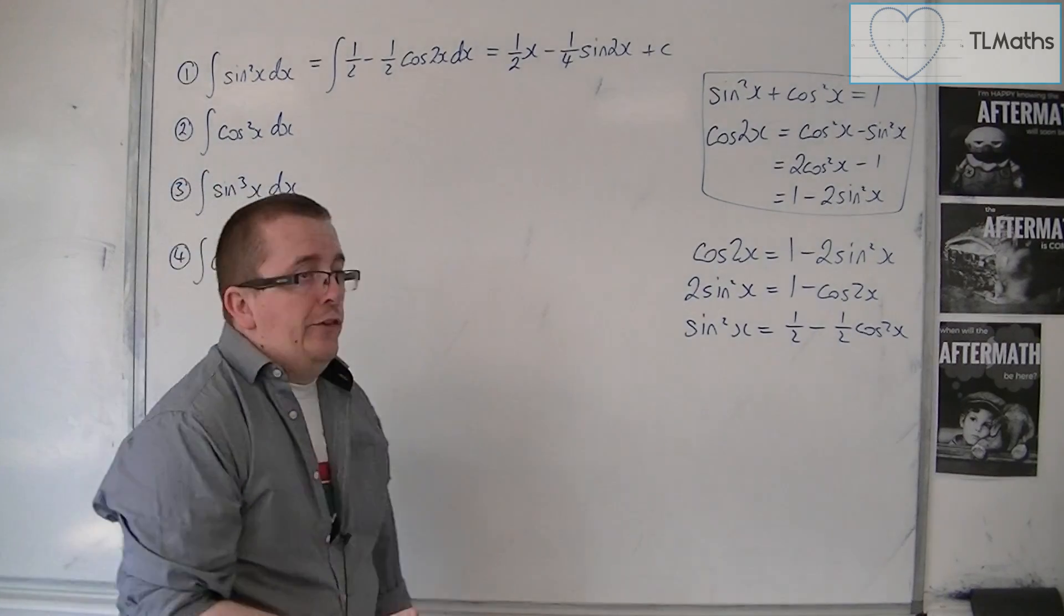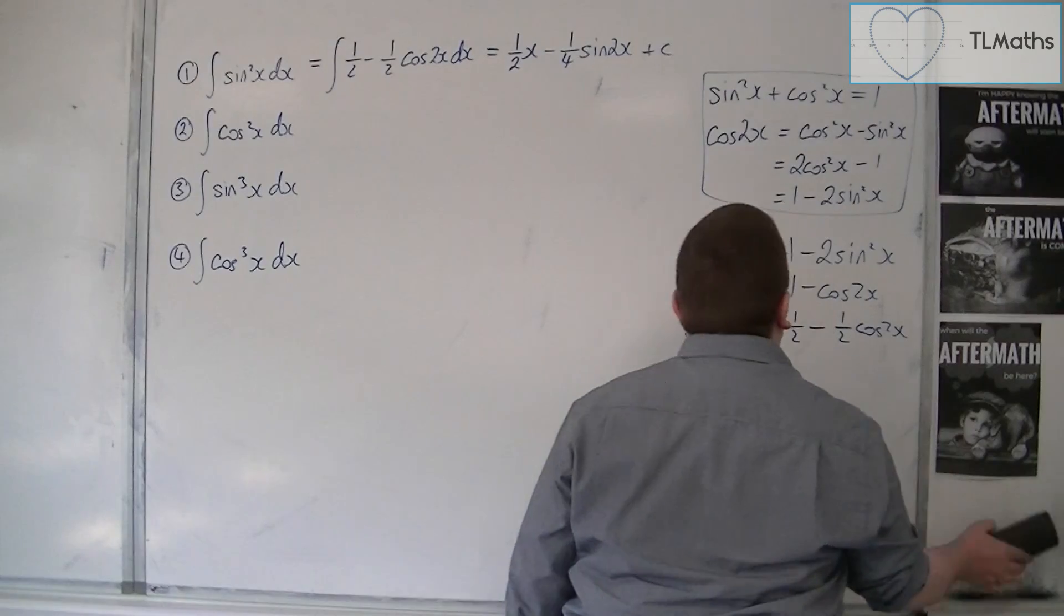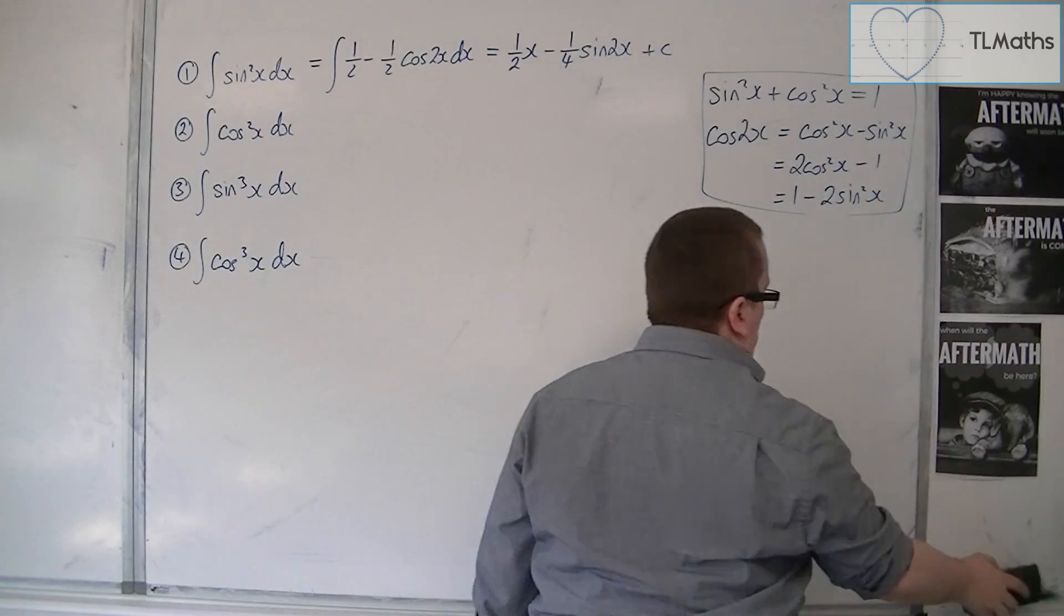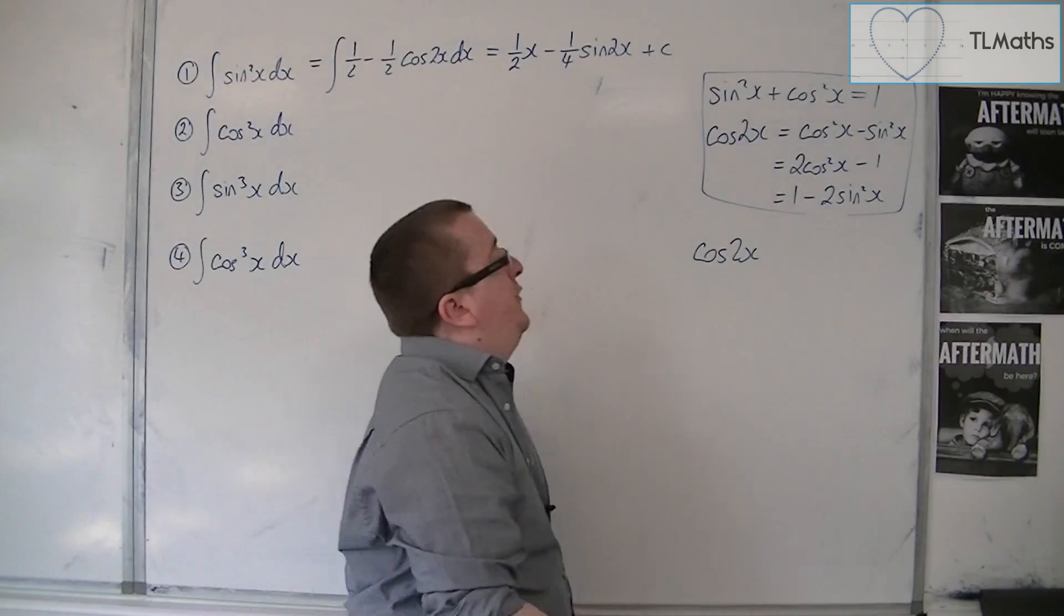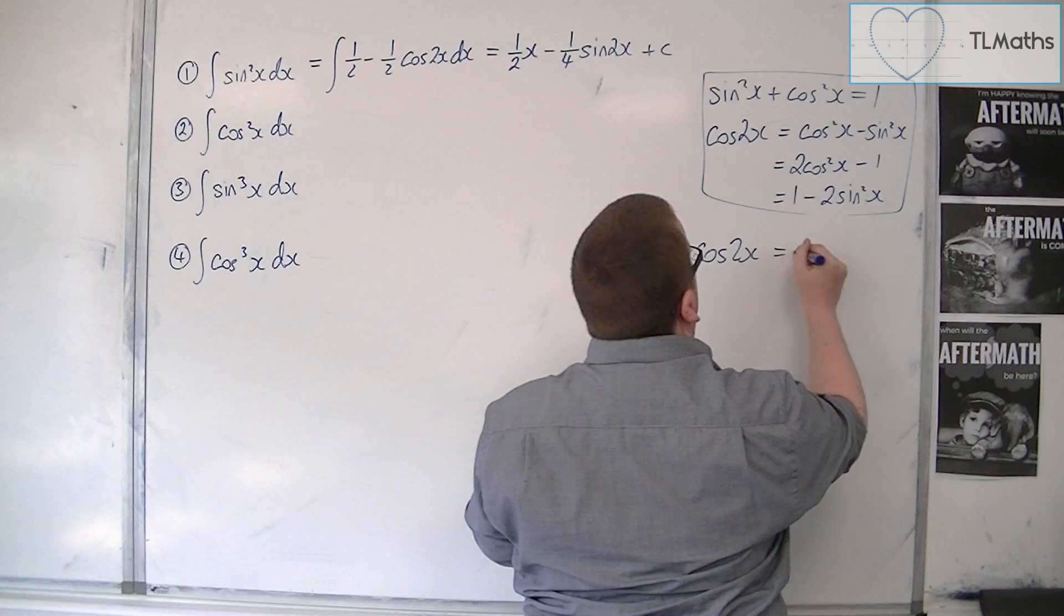Now for the second one, the integral of cos squared, once again, you could go about this using integration by parts. But it's not going to work out too well for us. So we're going to use the other identity for cos2x. 2 cos squared minus 1.